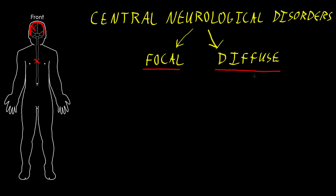So there's a very long list of disorders that can diffusely affect the brain. Epileptic disorders in particular — disorders that involve seizures — can cause either focal or diffuse central neurological syndromes, because seizures can start in just one part of the brain, causing a focal syndrome, and they can either stay in that spot or spread to involve most of the cerebral cortex on both sides. Or, some seizures can involve most of the cerebral cortex on both sides right from the beginning, causing a diffuse syndrome right from the start.